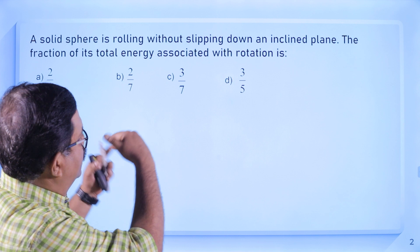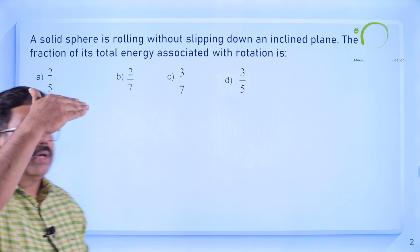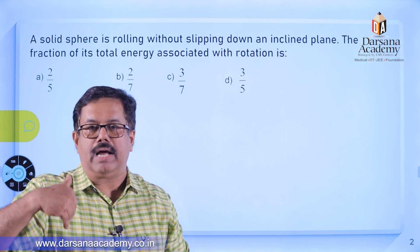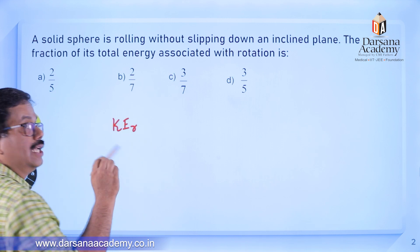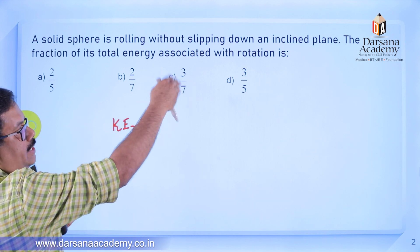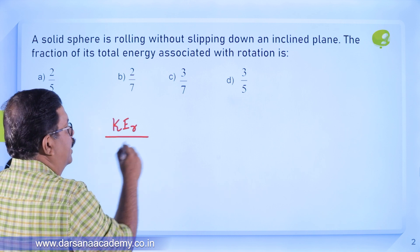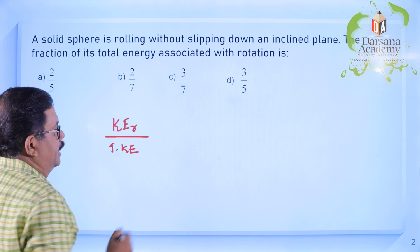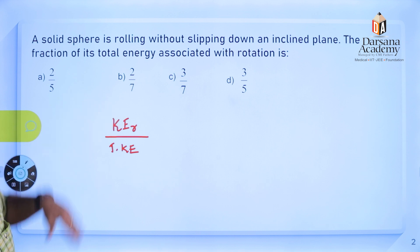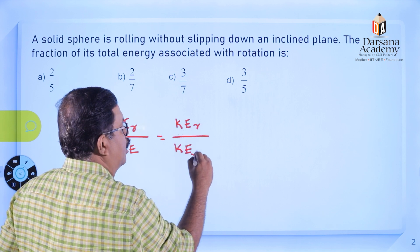The fraction we need is the ratio: rotational kinetic energy (KER) divided by total kinetic energy. The denominator is KER plus translational kinetic energy (KET).